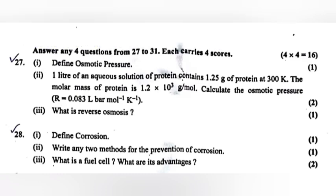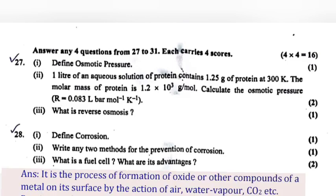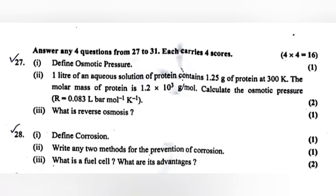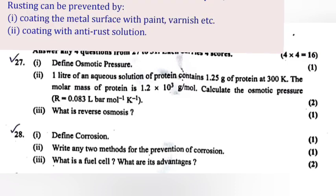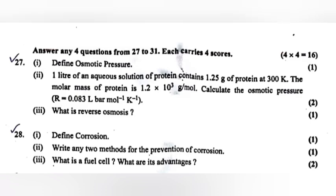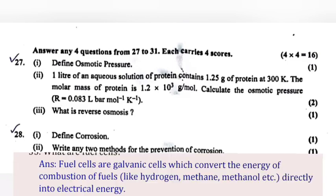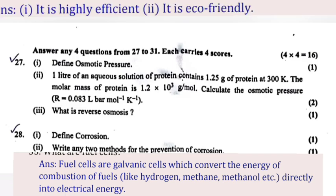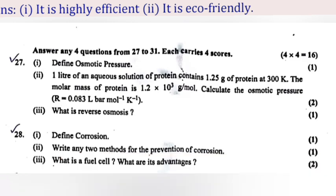Question 28, Part 1: Define corrosion. Answer: It is a process of formation of oxide or other compounds of a metal on its surface by the action of air, water vapour, carbon dioxide, etc. Part 2: Mention two methods for the prevention of corrosion. Answer: Coating the metal surface with paint or varnish. Coating with anti-rust solution. Part 3: What is a fuel cell and what are its advantages? Answer: Fuel cells are galvanic cells which convert the energy of combustion of fuels like hydrogen, methane, methanol, etc., directly into electrical energy. Advantages: It is highly efficient. It is eco-friendly.